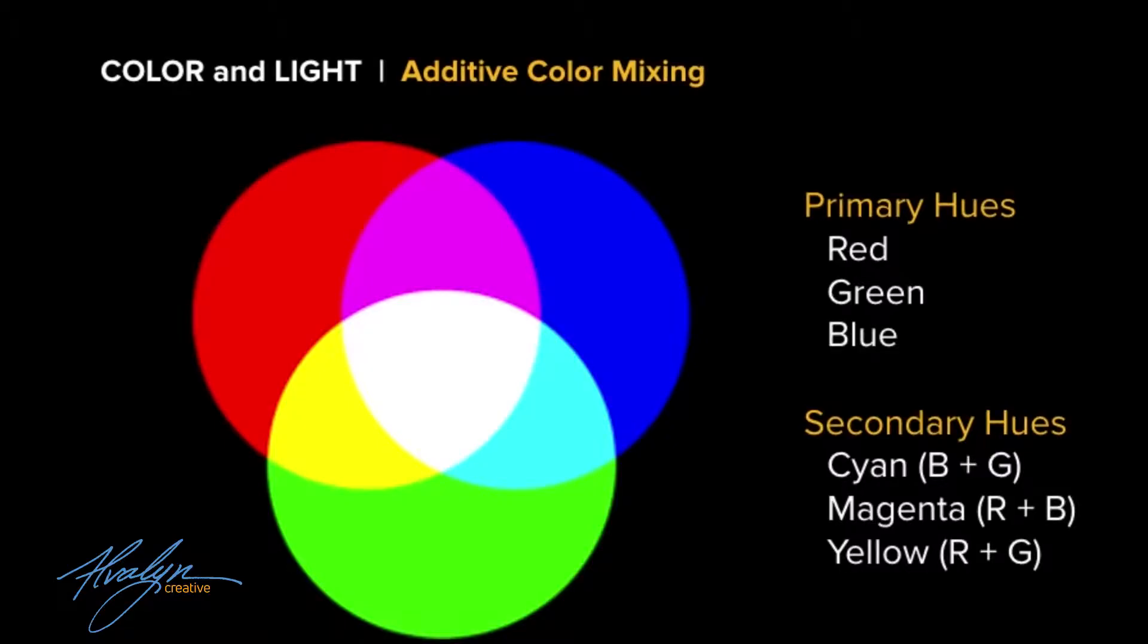When we work with light and we're dealing with color and trying to organize and sort color, we're talking about color that is known as additive. Additive just means that when you take the component colors, the foundational hues - red, green, and blue - and mix them together, you create all the other colors in the spectrum.